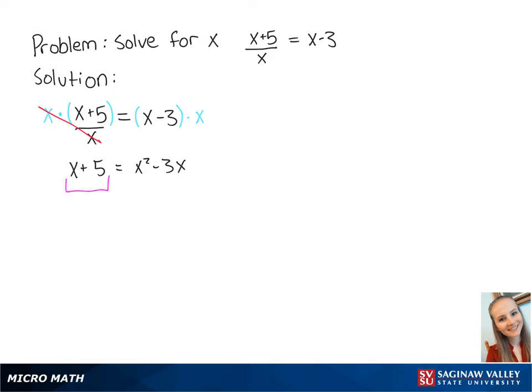To solve for x, we want the left side to be equal to 0. So we're going to subtract x plus 5 from both sides of the equation.